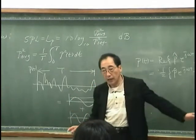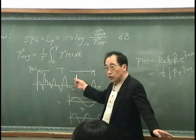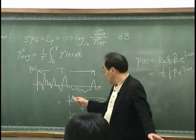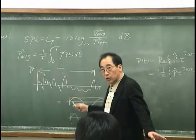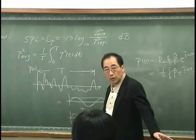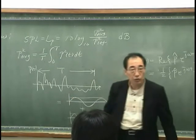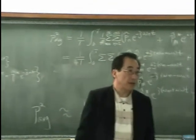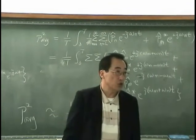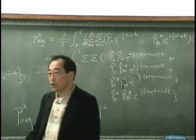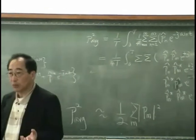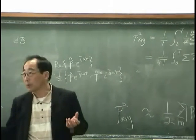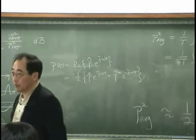This is magnitude and this is magnitude. The mean square average of this pressure is |P1|² + |P2|² + |P3|² + ... divided by 2 — that is the average. So I can say the mean square average of total sound pressure is the sum of the average of each frequency component.